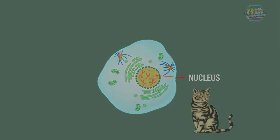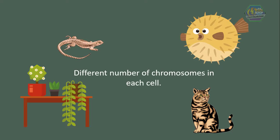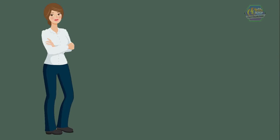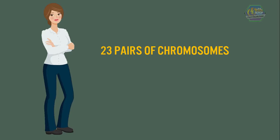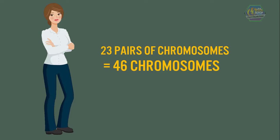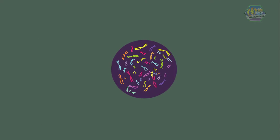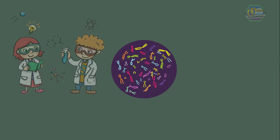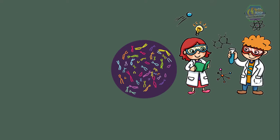Every living being has a different number of chromosomes in each cell. We humans have 23 pairs of chromosomes, for a total of 46 chromosomes in each cell. But don't think you can just see them — they are so small that we cannot even see them with a microscope. However, scientists can see them using special tools.